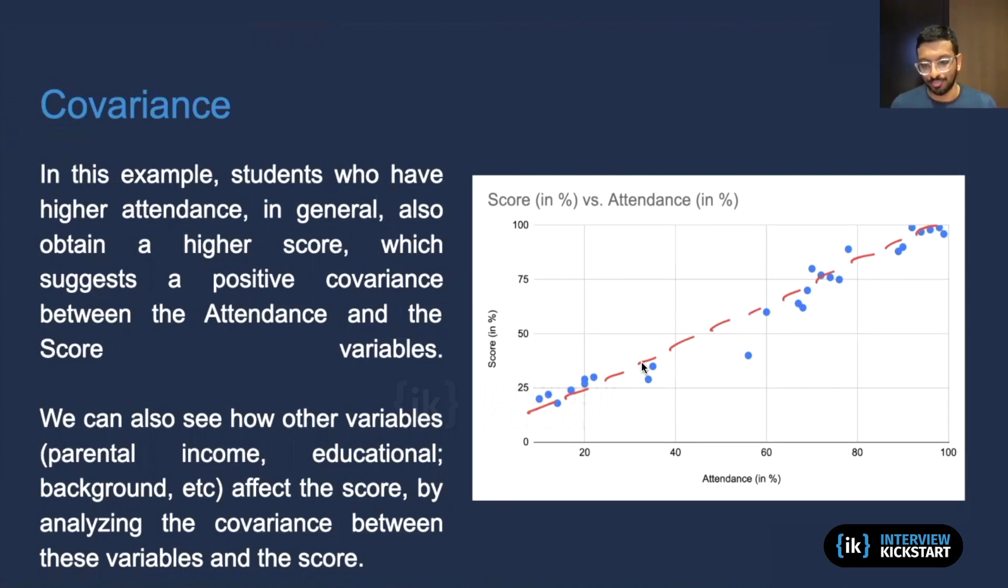We could, in the place of attendance on this x-axis, we could replace it with parental income, we could replace it with parents' educational background or maybe years of education if we were looking for a numeric value. And then we could find the covariance between each of those variables and the score. And then we could see whether they have positive or negative values or whether they have no impact at all.